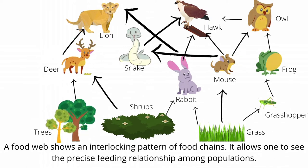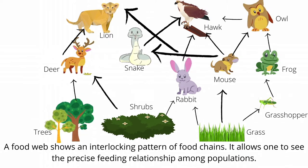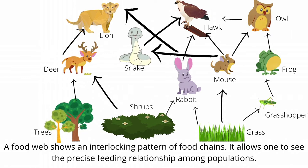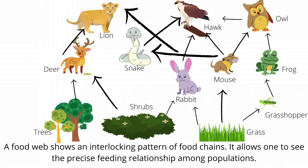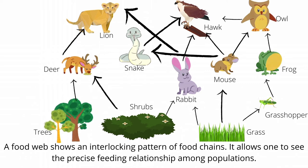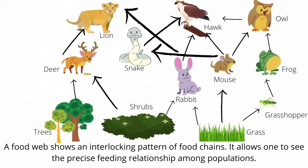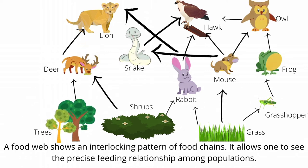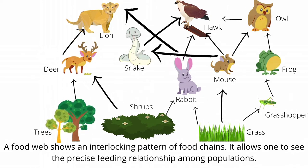A food web allows one to see the precise feeding relationships among populations. It is very rare for an organism to feed only on one type of food. Most of the time, carnivores eat other carnivores as well as herbivores. Some may even eat both animals and plants.